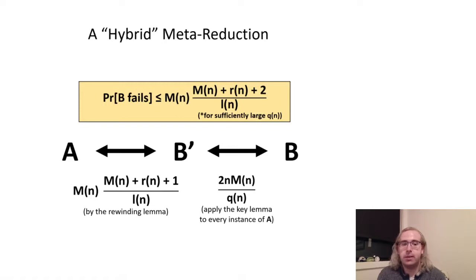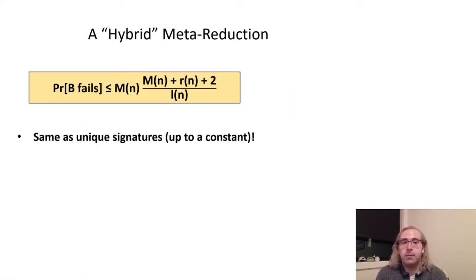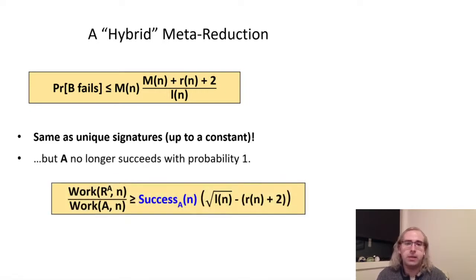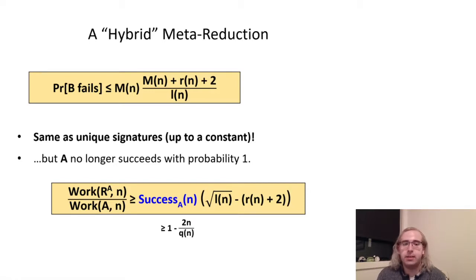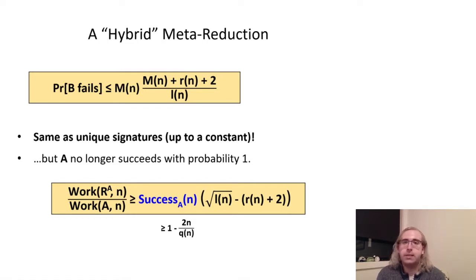So ultimately we get this bound on the probability that B's emulation of A fails. From here, we can essentially use the same argument as we used for unique signatures to bound the work ratio, with the minor caveat that A no longer succeeds with exactly probability 1 as it did before. The reason for that goes back to key uniqueness and the fact that, even with the additional tag queries added, A might still choose an incorrect key which agrees with the actual key in all of the queries. But, by once again leveraging the key uniqueness lemma, we can still show that the success probability of A is high, so this has very little impact on the actual bound we achieve, especially because Q can be an arbitrarily large polynomial. In the end, we still rule out all linear-preserving reductions, obtaining a bound virtually identical to that of our earlier result for unique signatures, though we note that whether either of these bounds is tight remains an interesting open question.